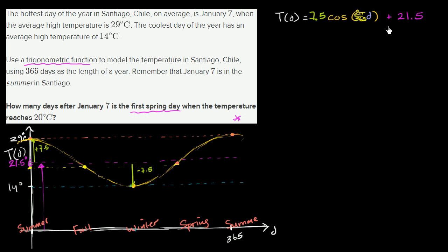So let's just think about that as we try to manipulate this a little bit. So we want to get to 20 degrees Celsius. We could write 20 is equal to 7.5 times cosine of 2π over 365 times the days plus 21.5. Now we could subtract 21.5 from both sides and we get negative 1.5 is equal to that right over there.